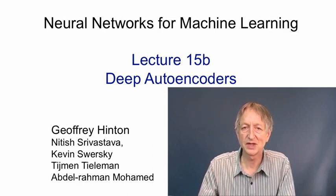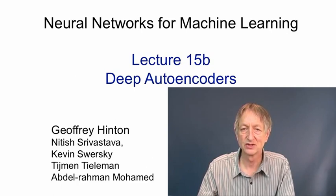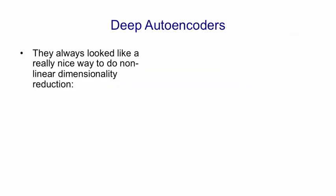After we developed methods of pre-training deep networks one layer at a time, Russ Salakudinov and I applied these methods to pre-training deep autoencoders, and for the first time we got much better representations out of deep autoencoders than we could get from principal components analysis. Deep autoencoders always seemed like a really nice way to do dimensionality reduction, because it seemed like they should work much better than principal components analysis.